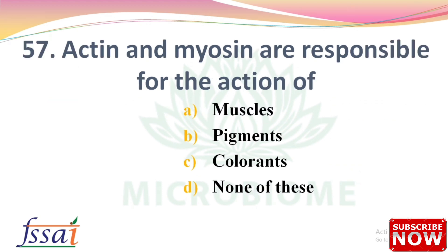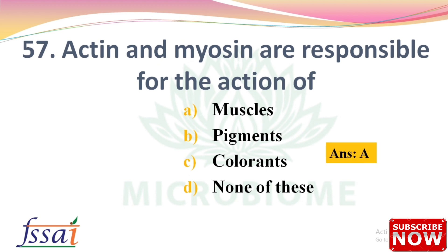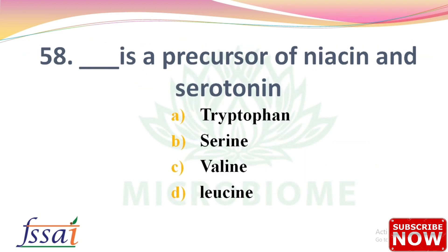Next: Actin and myosin are responsible for the action of — options: muscles, pigments, colorants, none of these. The right answer is option A, muscles. Next: Dash is a precursor of niacin and serotonin — options: tryptophan, serine, valine, leucine. The right answer is option A, tryptophan.